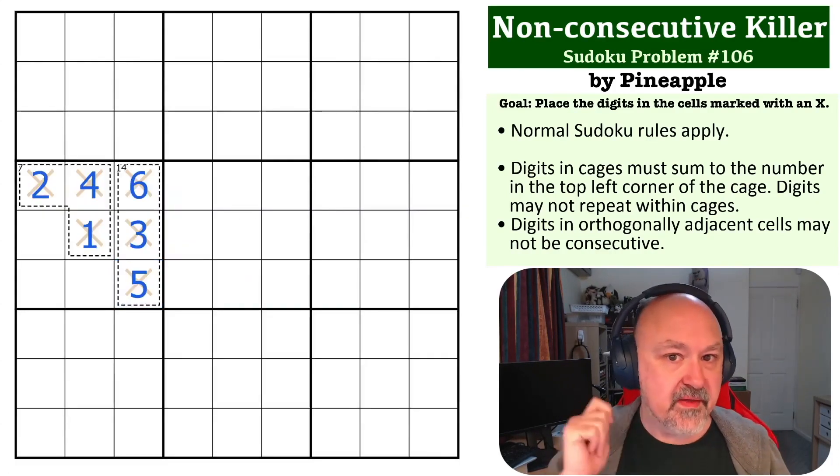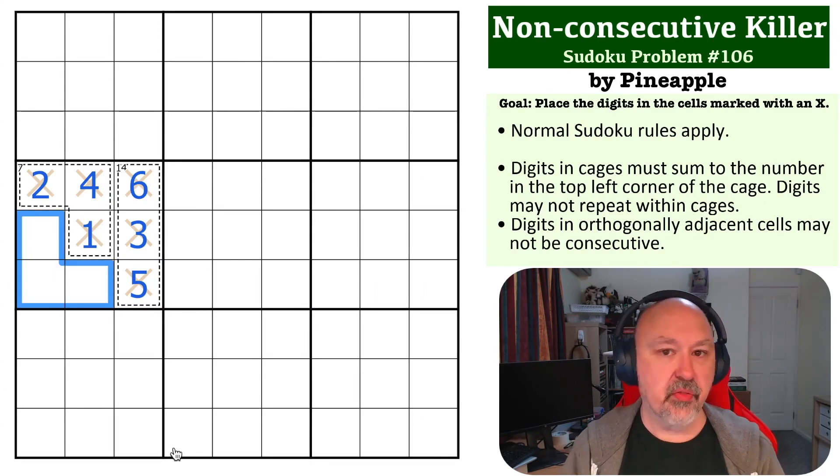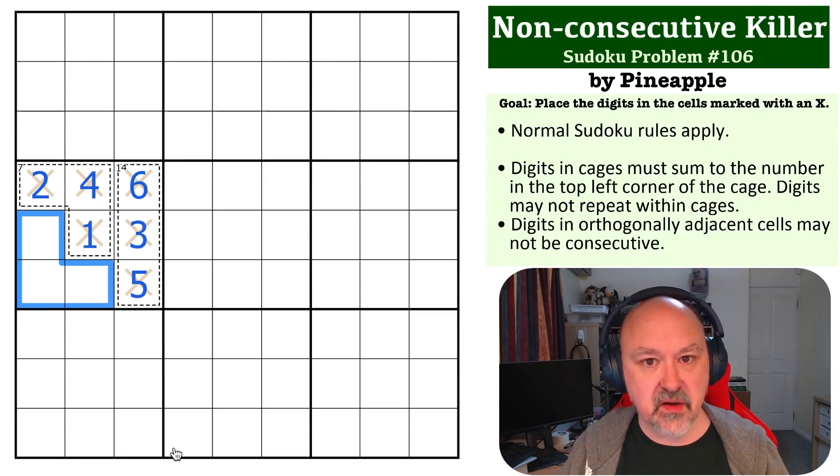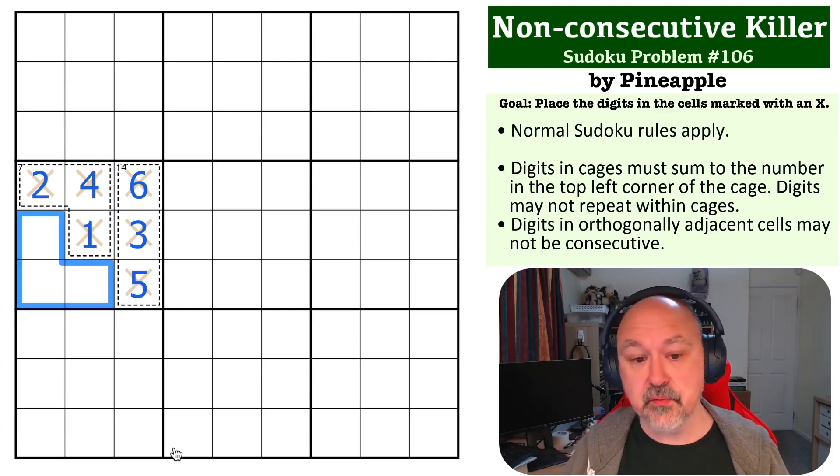Now, there are going to be some people who comment on this one, basically saying this is broken because there is no way to fill those cells. Because however I put those in, seven, eight, nine, eight is going to be consecutive to seven, eight, or nine. But remember the fundamental rules of the Sudoku problem.